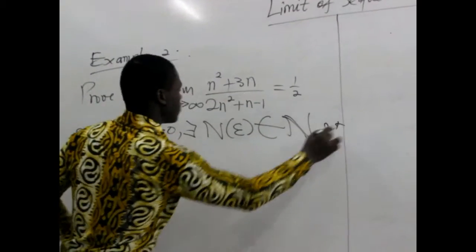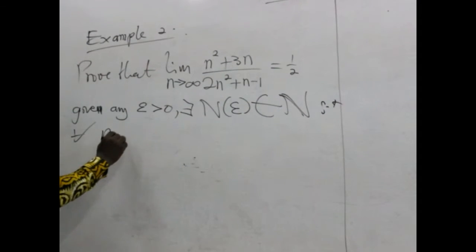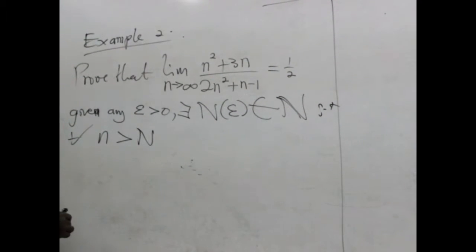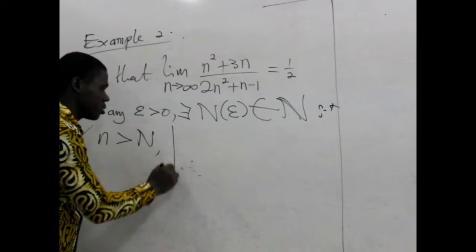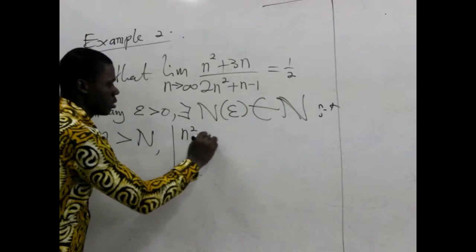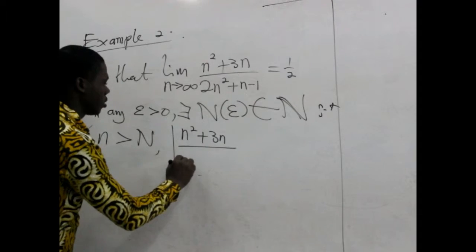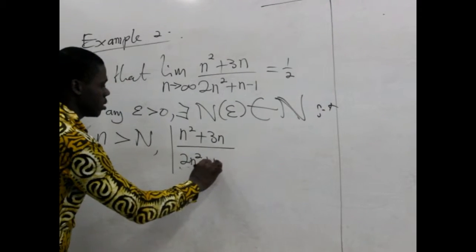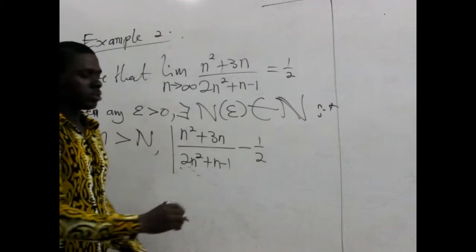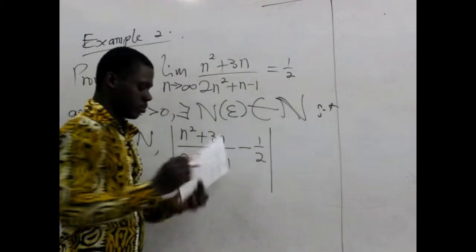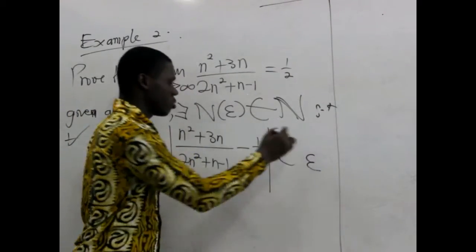Such that, for all small n greater than big N, we say that the absolute of this particular sequence, which is n squared plus 3n, divided by 2n squared plus n minus 1, minus its limit, should be less than epsilon. That's what we are proving.